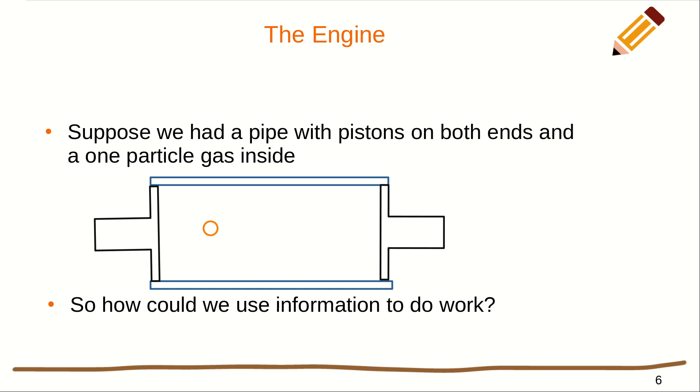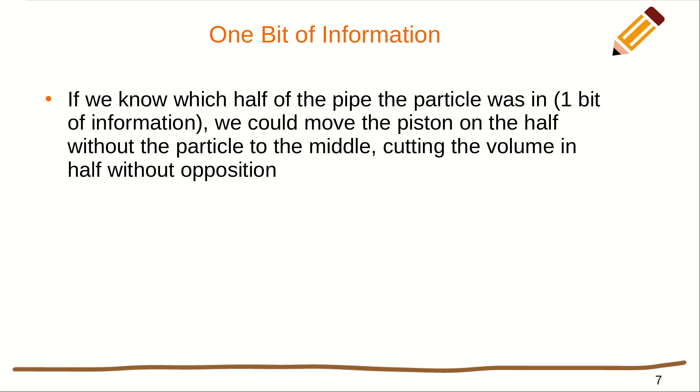Well, suppose we knew which half of the pipe the particle was in. And then, if we knew which half of the pipe the particle was in, we could quickly slip the piston on the other half halfway in. Thereby, we reduced the volume by a factor of two, and we did that without opposition, because the particle was in the other half of the box, and so there was nothing opposing us when we pushed it in.